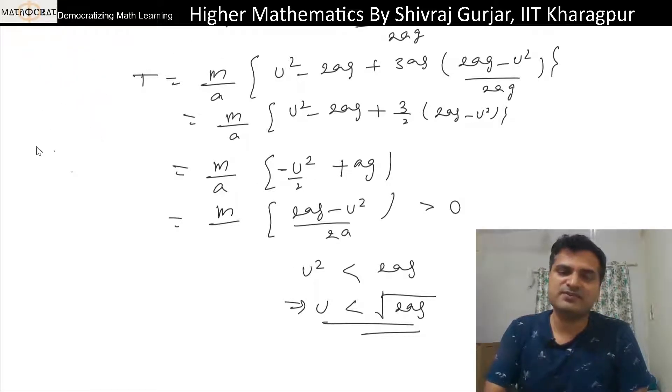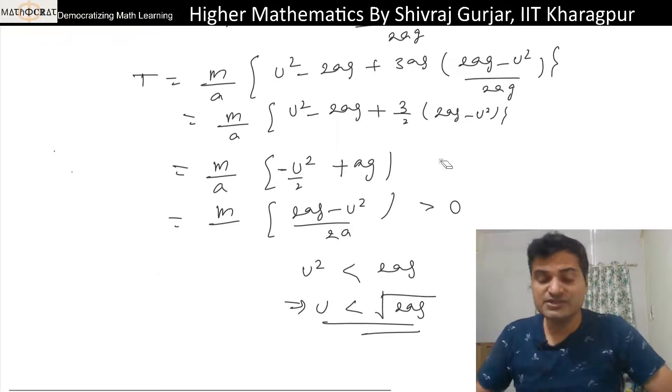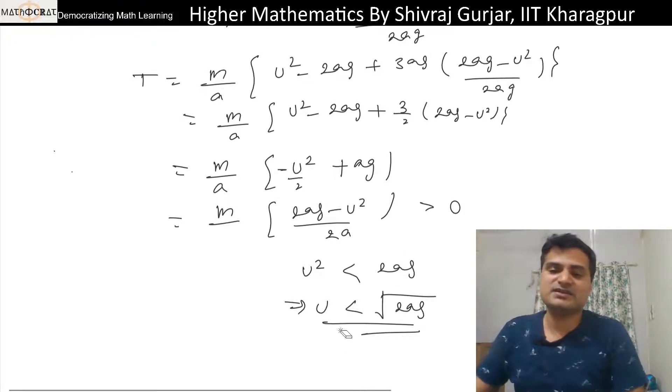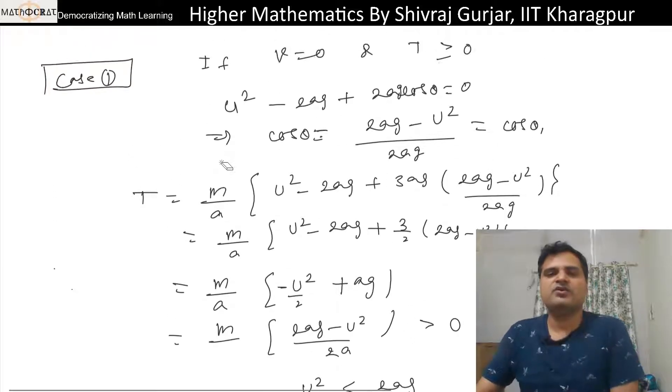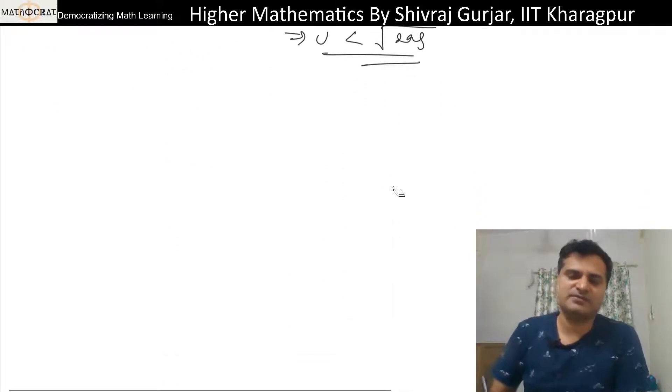We'll discuss that as well. The first case was when velocity is 0, tension is not 0, means in that case the initial velocity will be less than √(2ag).